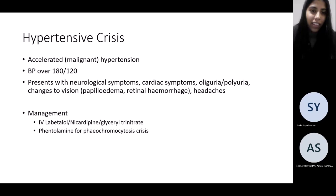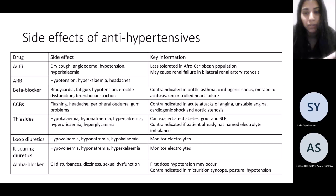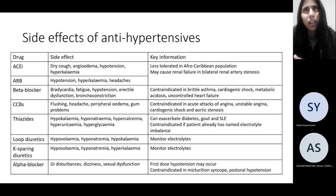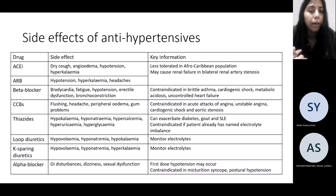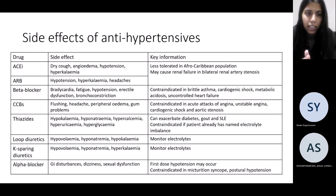Side effects of antihypertensives are important to know, especially for OSCEs where you may need to counsel patients. ACE inhibitors can cause a dry cough and dizziness — which is why some people take it in the evening. Beta blockers can cause bradycardia, dizziness, fatigue, bronchoconstriction — relevant for asthma patients — and erectile dysfunction. Key information: if someone has bilateral renal artery stenosis, ACE inhibitors are contraindicated.